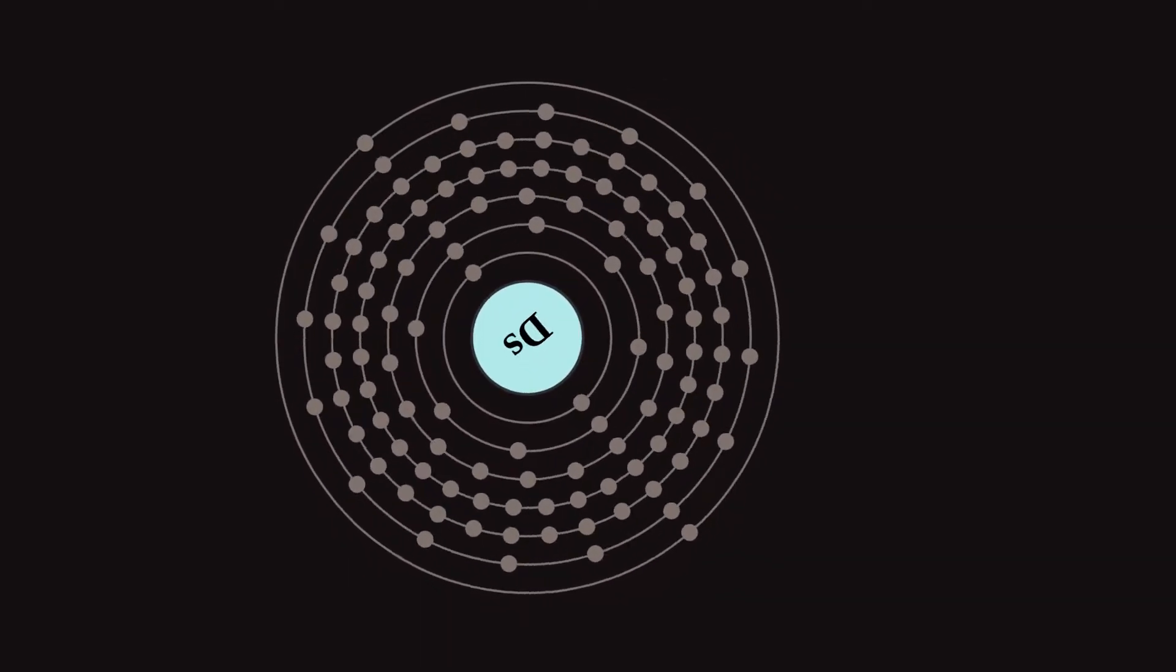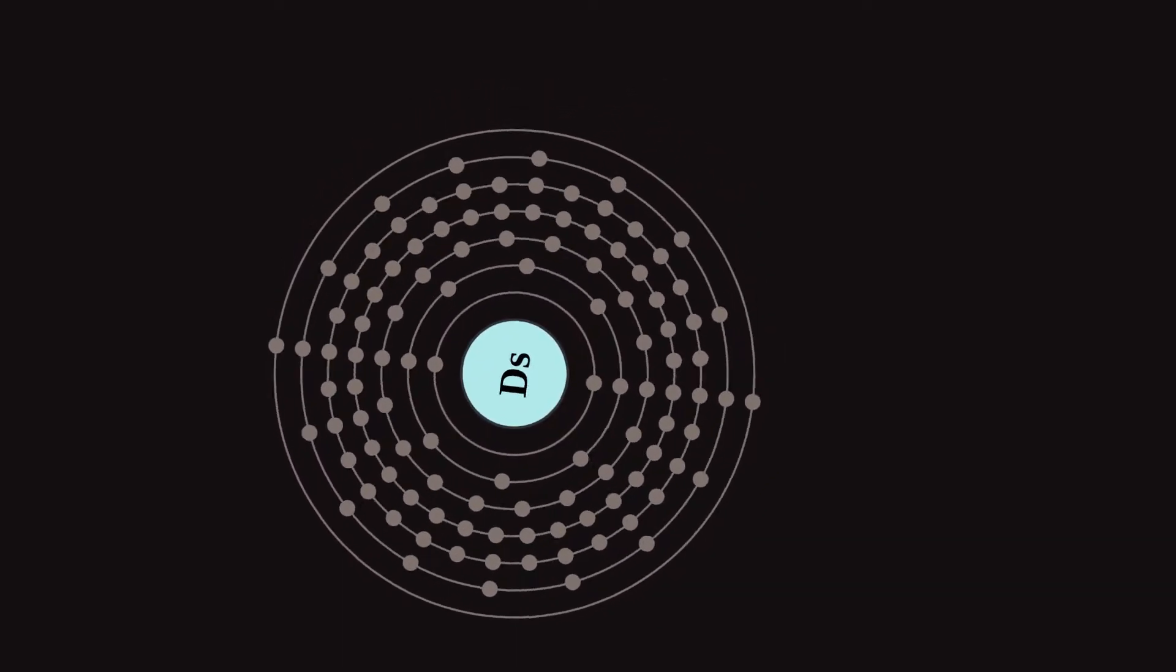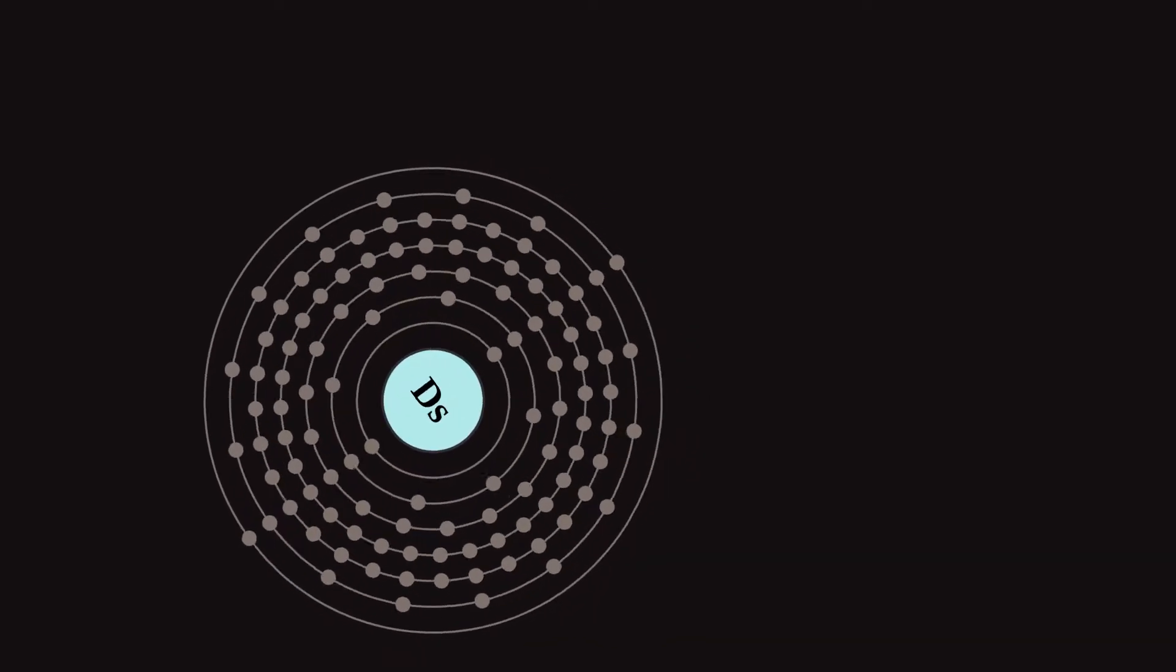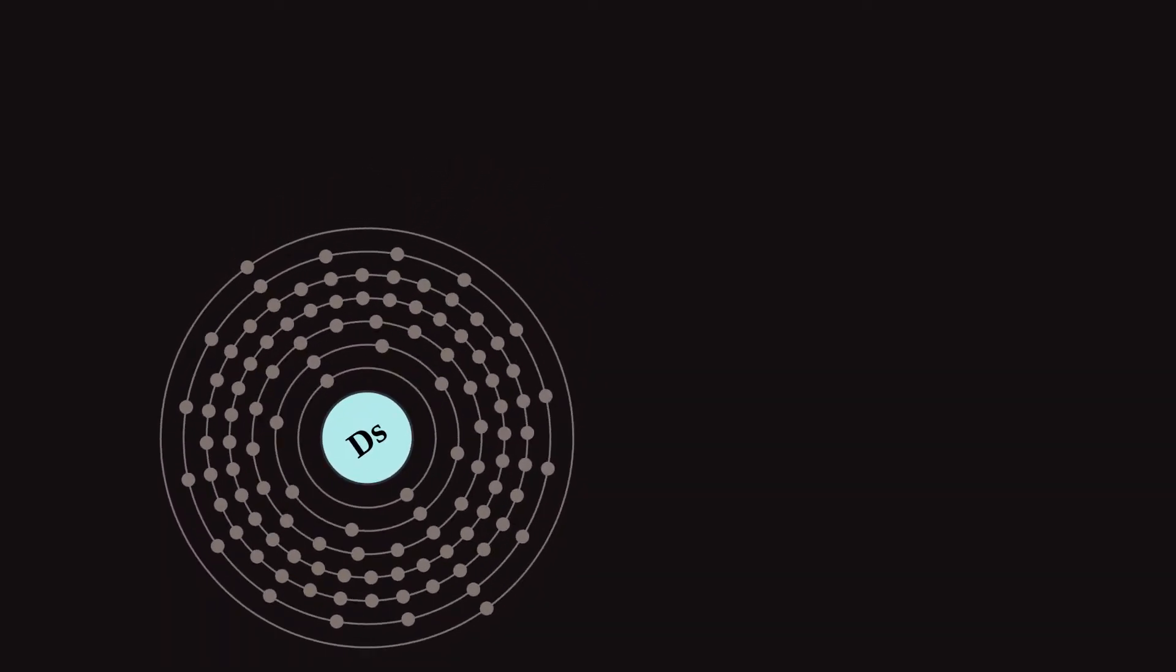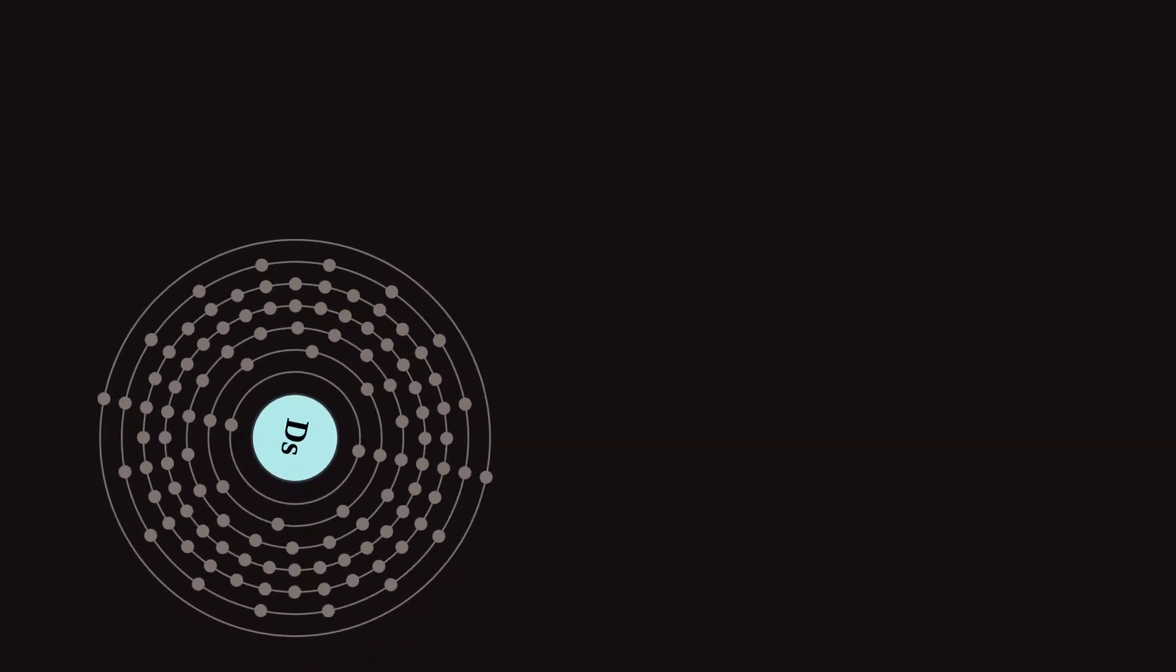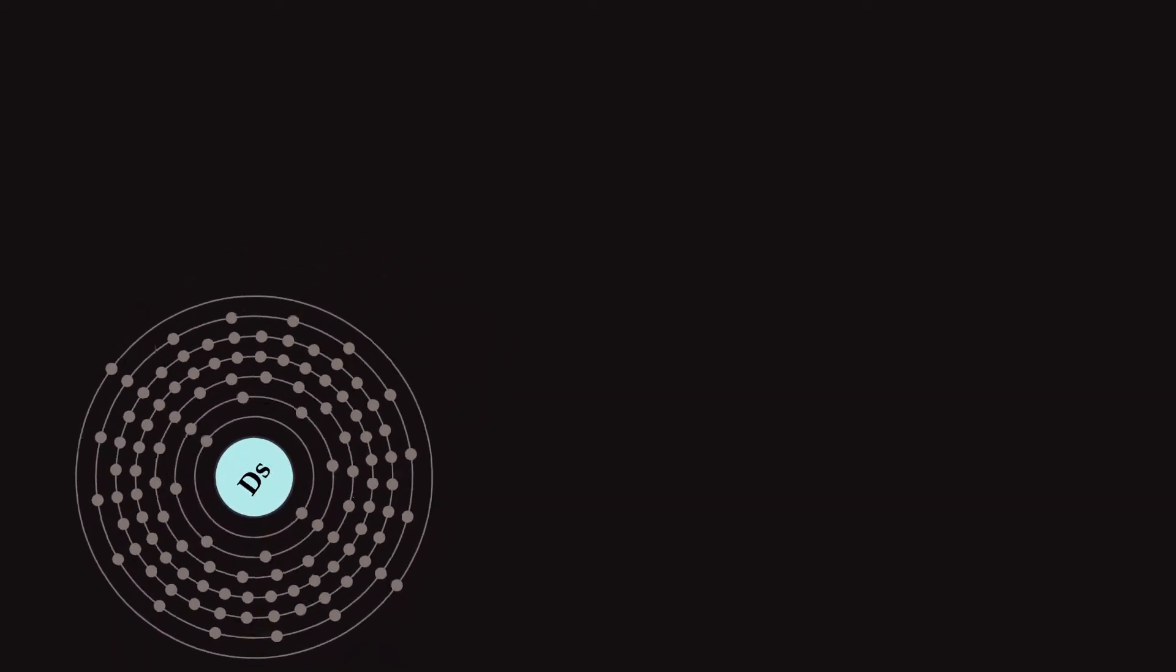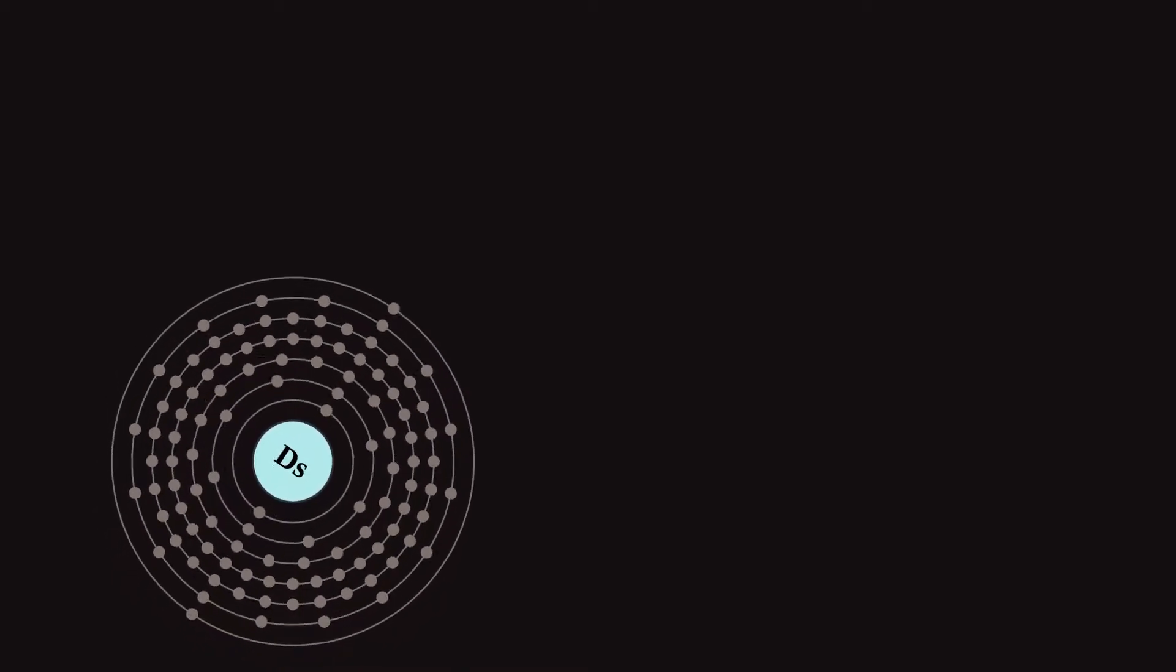Darmstadtium is a synthetic chemical element with symbol Ds and atomic number 110. It is an extremely radioactive synthetic element. The most stable known isotope, Darmstadtium-281, has a half-life of approximately 10 seconds.